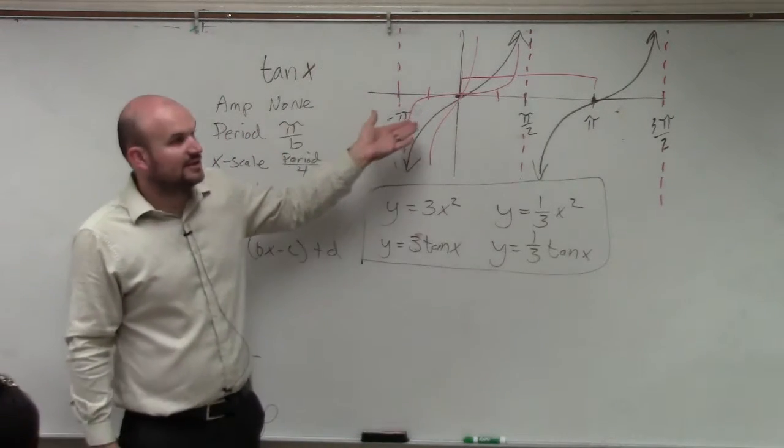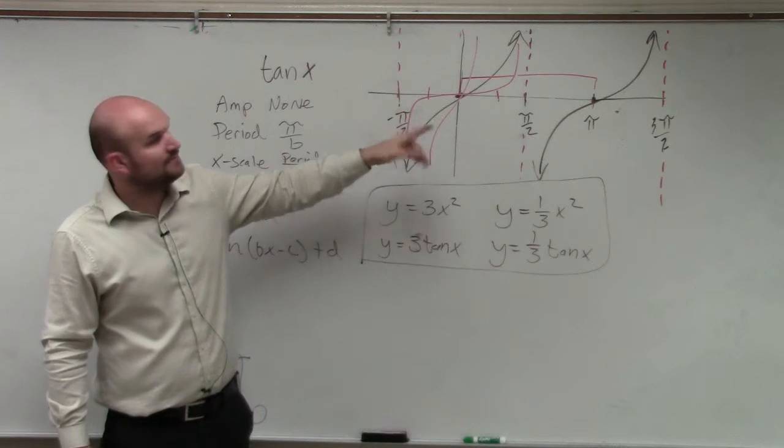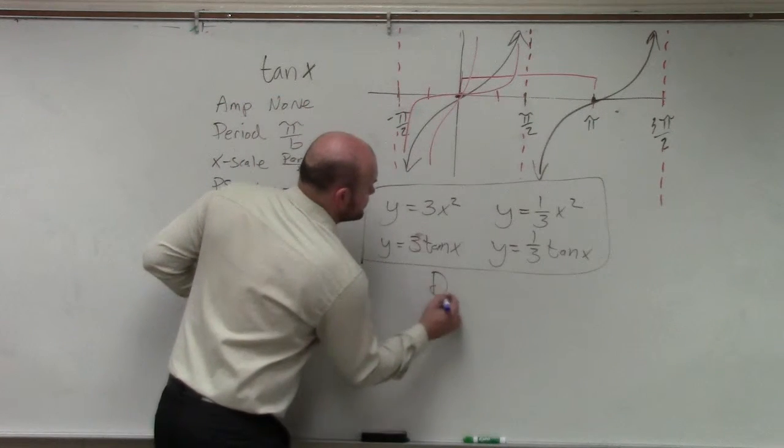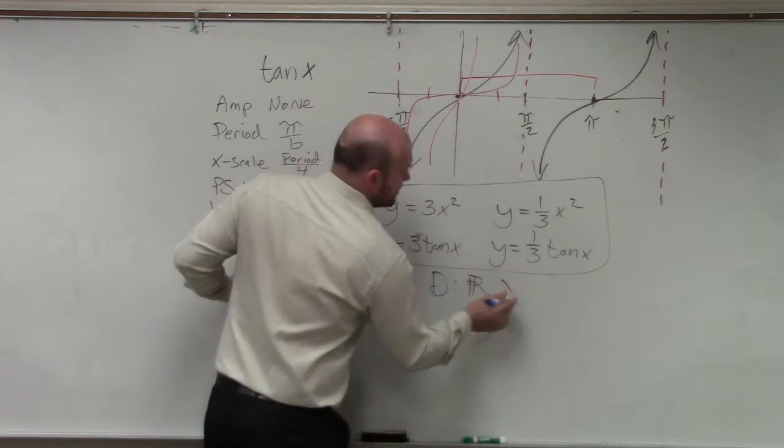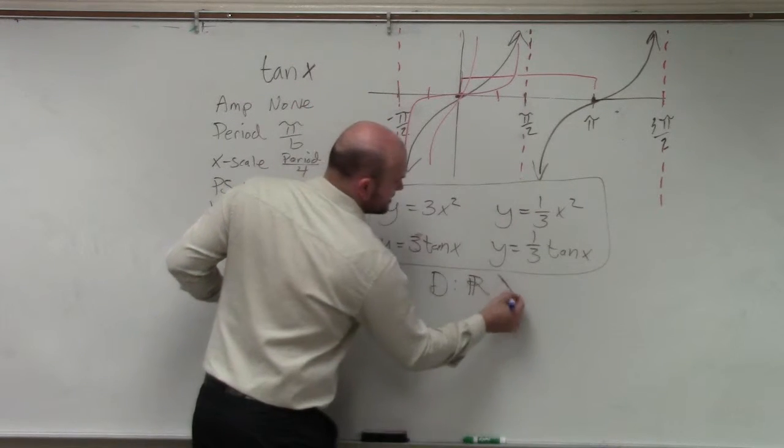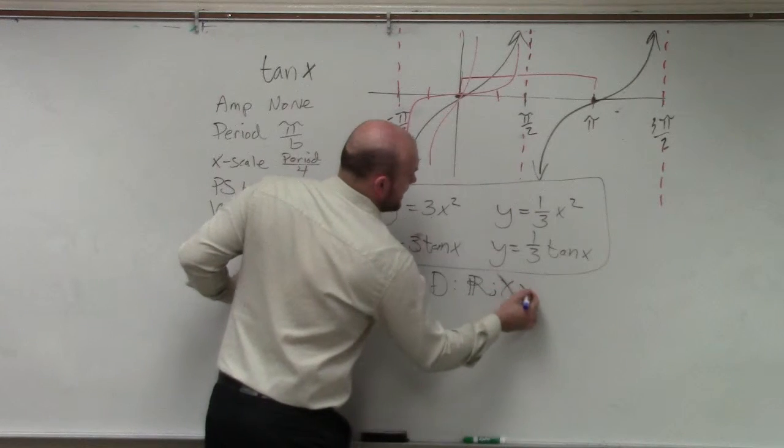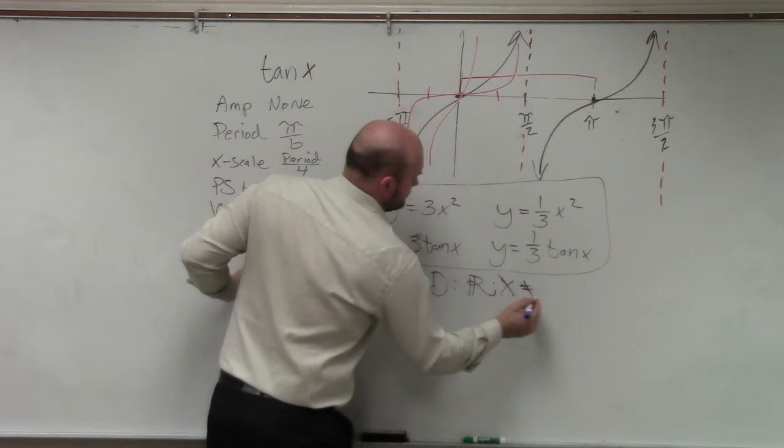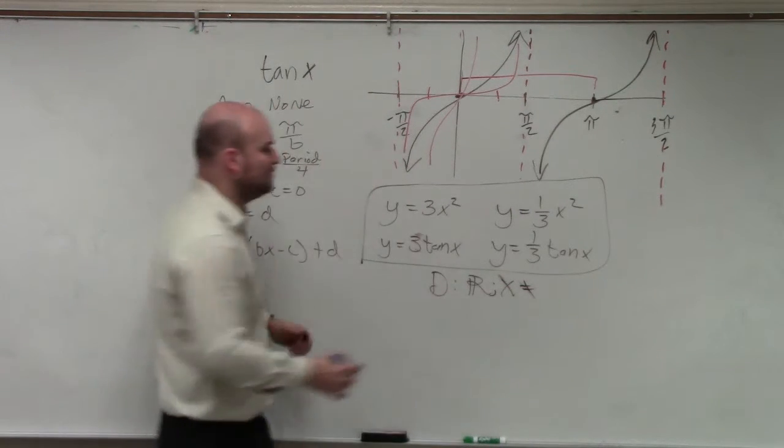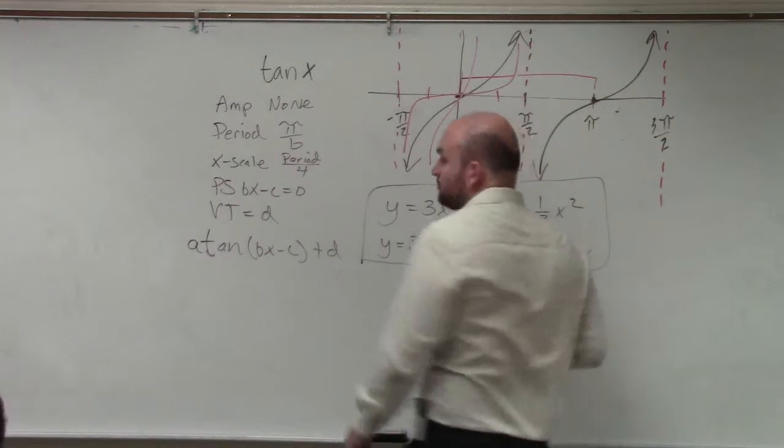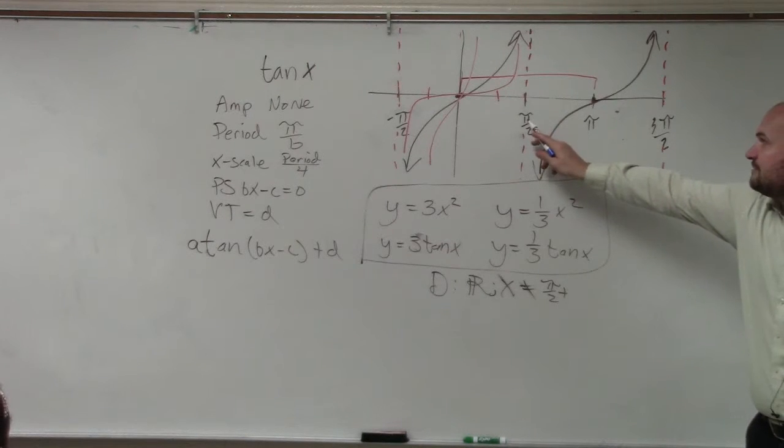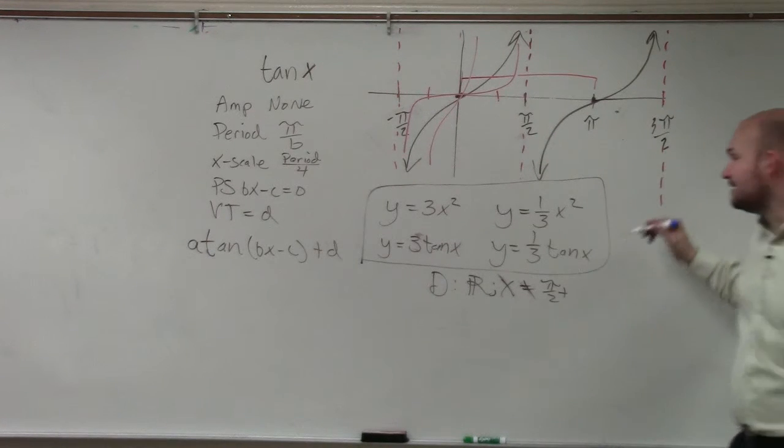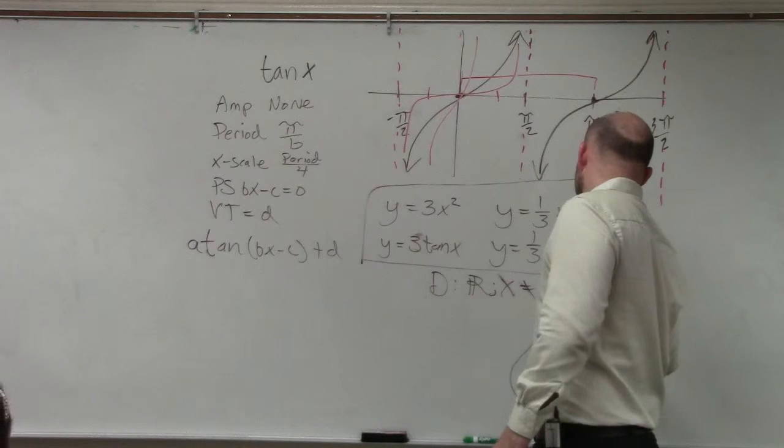Now, you could look at the domain. The domain is different now. The domain is, domain we could say is all real numbers except our input, whatever our input is, x cannot equal pi-halves plus what? Well, how far does it go from my first asymptote to my next asymptote? Pi. And how many times can I add pi? n.